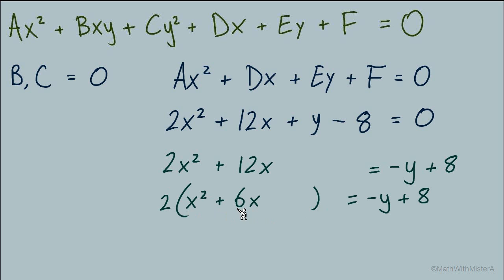I'm moving the y and the constant negative 8 over to the right side so I can complete the square on the left. We need to factor out this 2 first. We can only complete the square when our leading term is x squared. Now our middle coefficient here, 6, we cut in half and square it to give us positive 9. We need to keep this equation balanced.